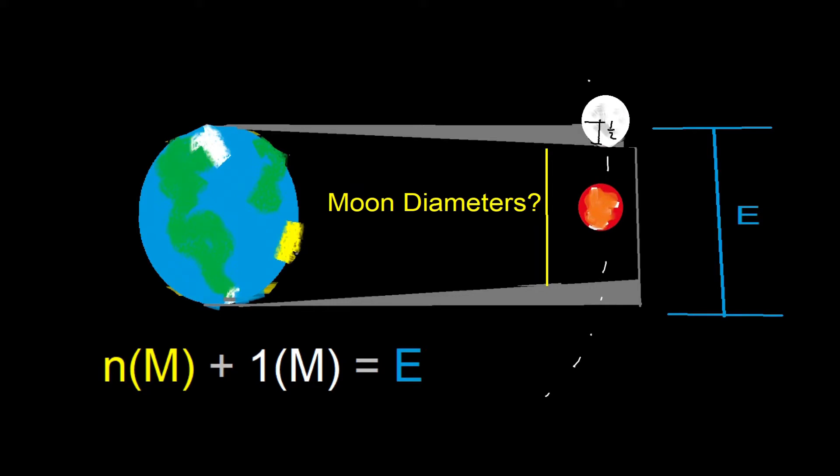The number of moon diameters, m, which is what we're trying to find, plus one extra moon diameter due to the distance the moon has to cross through the penumbra, equals the diameter of the Earth.